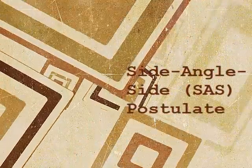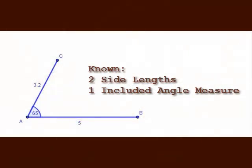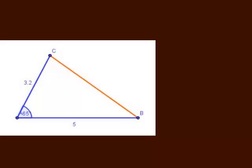In this video, we are going to explore the properties of a triangle with two known side lengths and a known included angle measure. Specifically, how many different triangles can we create with the same set of two known lengths and one known included angle measure?